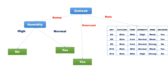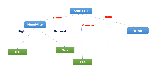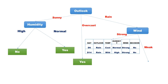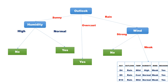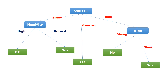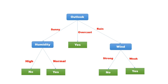Split the records using the attribute wind. Wind has two values, so there are two branches. Records with value strong have class label no, so make it a leaf node. Records with value weak have class label yes, so make this also a leaf node.